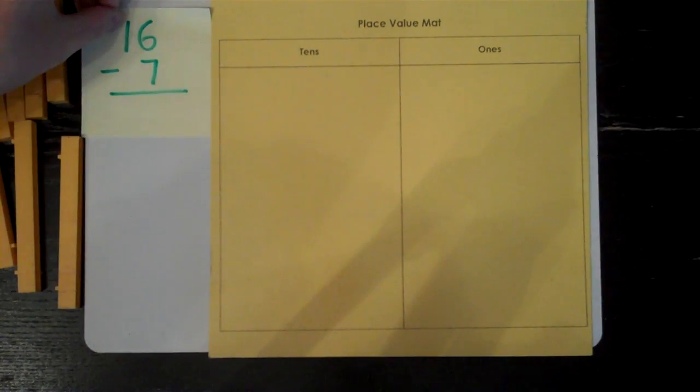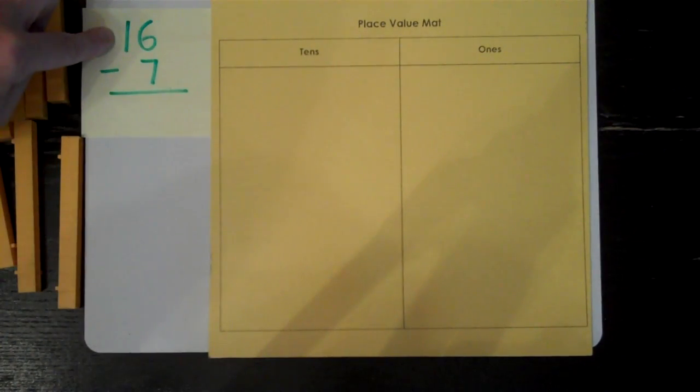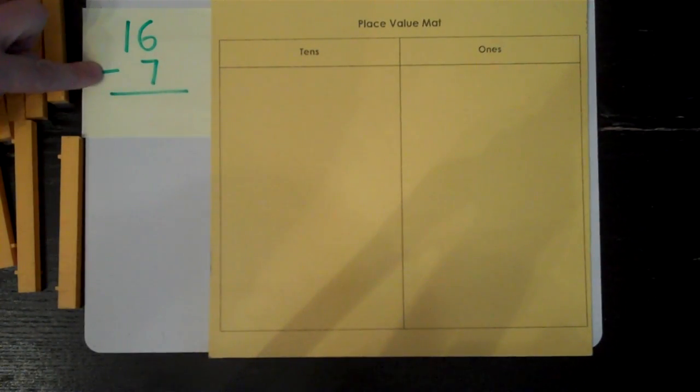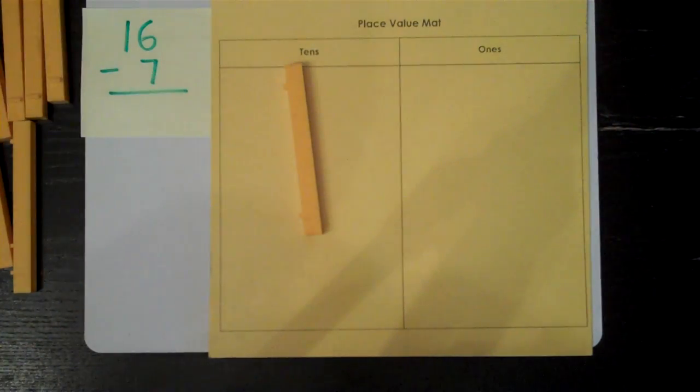Let's start with 16 minus 7. Remember that in subtraction we always need to start with the first number. That's what we have the total amount of. The second number is what we take away. So I need to make 16. I have one 10 and six ones.